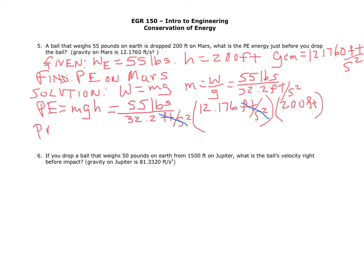The potential energy equals 55 divided by 32.2 times 12.176 times 200. When you calculate that out, you get 4,160 foot-pounds.